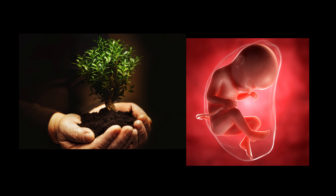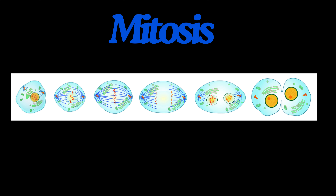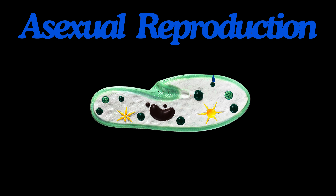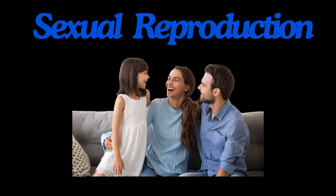Lesson 3: Growth and Reproduction in Living Things. This lesson covers the processes of mitosis and meiosis. Mitosis is the division of cells that produces identical new cells for growth and repair. Meiosis involves cell division that results in sex cells — gametes — with half the usual DNA, which are essential for sexual reproduction. We also explain the differences between asexual and sexual reproduction, highlighting how asexual reproduction involves one parent and produces identical offspring, while sexual reproduction requires two parents and results in genetically diverse offspring.